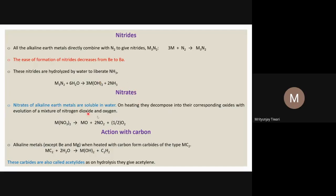Alkaline earth metal nitrates are soluble in water. On heating, they decompose into the corresponding metal oxide, NO₂, and O₂ — similar to lithium nitrate. This is different from other alkali metal nitrates, which give alkali metal nitrite (MNO₂) on heating.